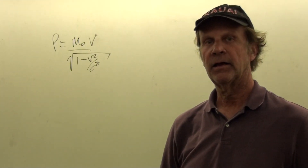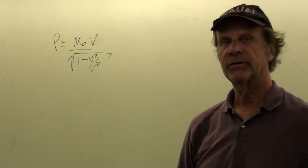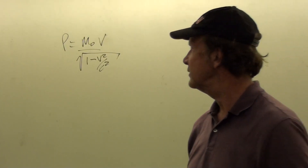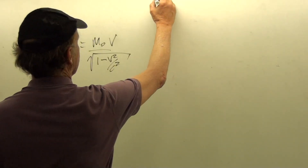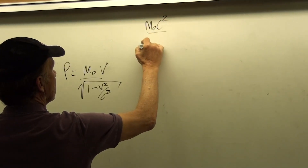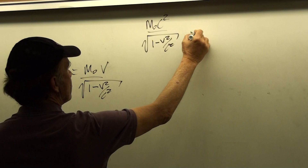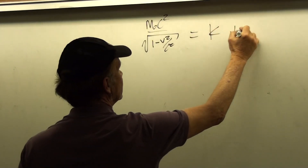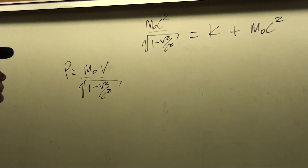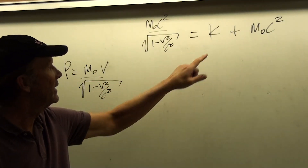Next I'd like to look at what's called the Einstein triangle relationship. What this is going to do is connect in — in the last example we looked at a way of saying total energy is equal to kinetic energy plus rest energy. And so that related total energy to kinetic energy.